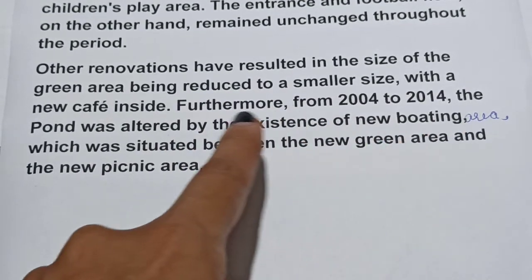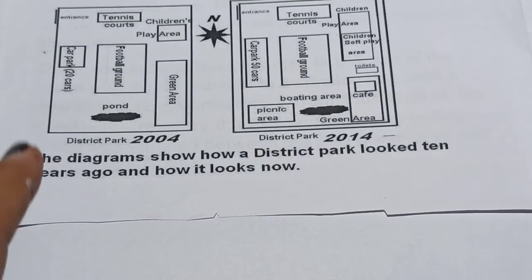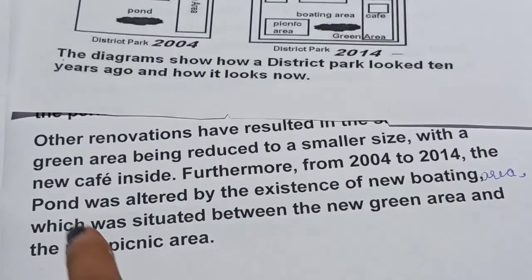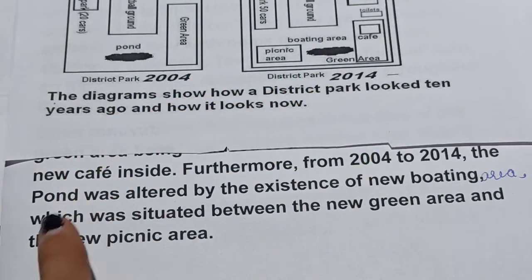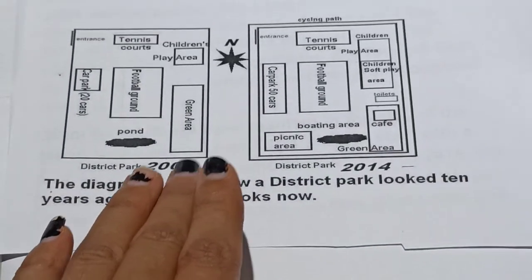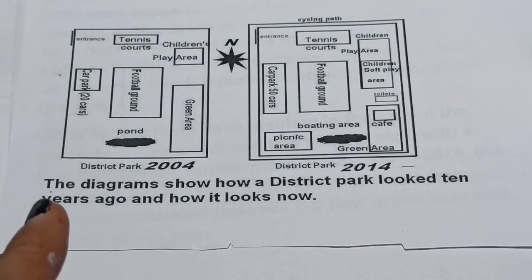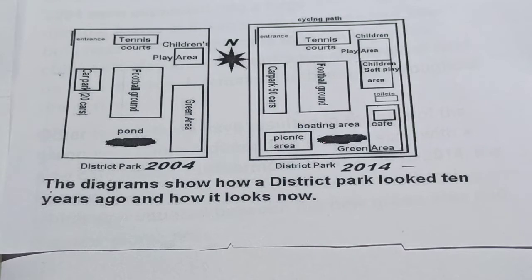The pond was replaced by a boating area situated between the new green area and a new picnic area. The whole district park has also been surrounded by a new cycling path, which was created by 2014. That's all for today — if you liked the video, please hit the like button and subscribe to our channel.